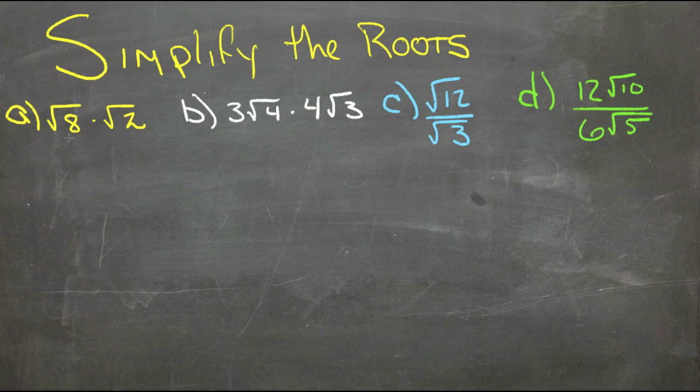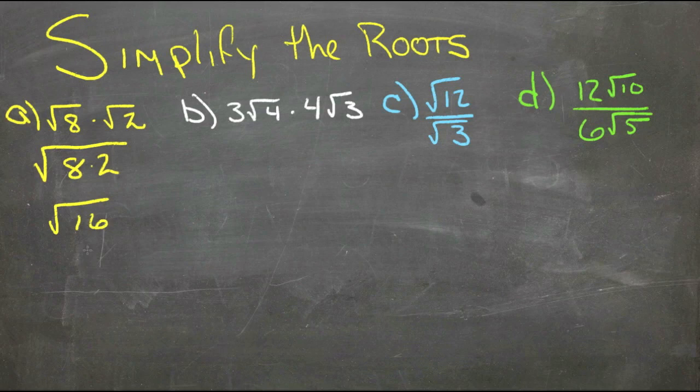So for this first example here, we have root 8 times root 2. That would be the same as the root of 8 times 2, which would be the root of 16, which we know is 4, because 4 is a perfect square. So that's pretty easy.